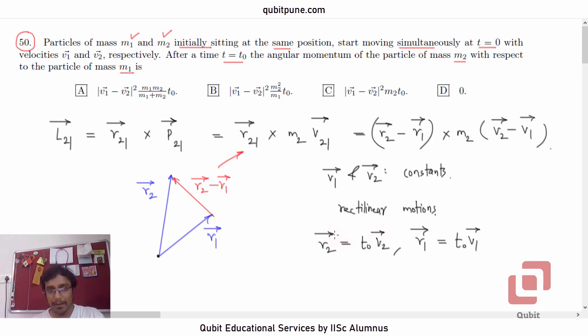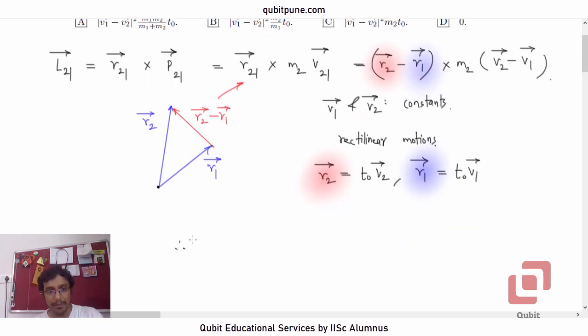Now, here is the main step in the problem. You have to put r2 bar as t0 v2 bar and r1 bar as t0 v1 bar here. That will give us the answer. So l21 bar is equal to, if I put r2 bar as t0 v2 bar and take t0 outside, it will be v2 bar. And if I write r1 bar as t0 v1 bar and again take t0 outside, it will be v2 bar minus v1 bar times t0 cross m2 v2 bar minus v1 bar.